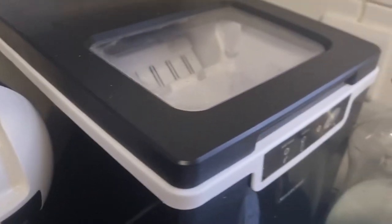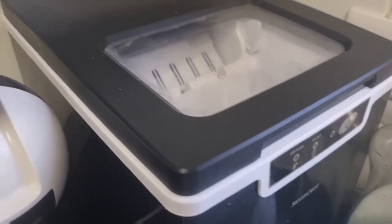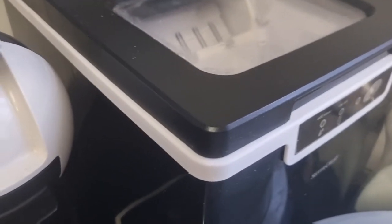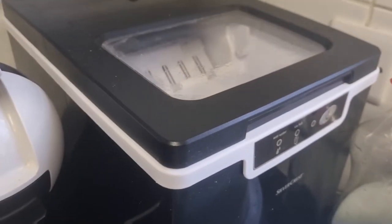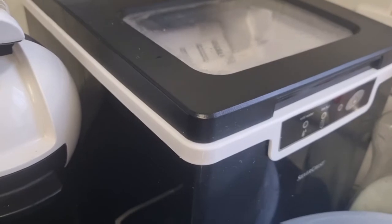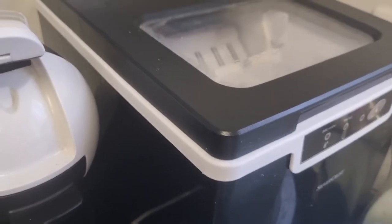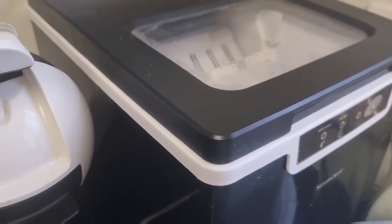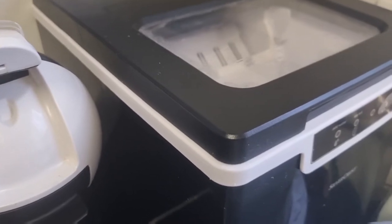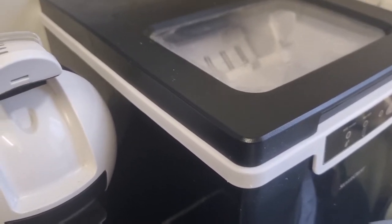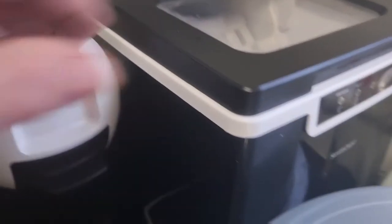Next we have the ice maker. It's not on at the moment, this is a Silvercrest, it was 80 pounds from Lidl's. Come the summer it's worth its weight in gold. It makes 10 ice cubes at a time and it takes approximately 10 minutes for each cycle, so you soon get lots of ice cubes in there.